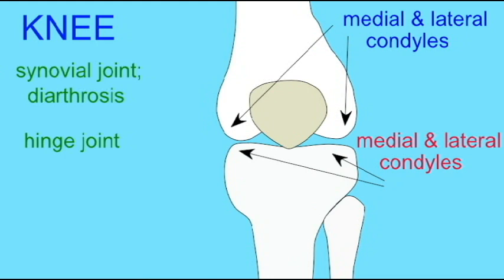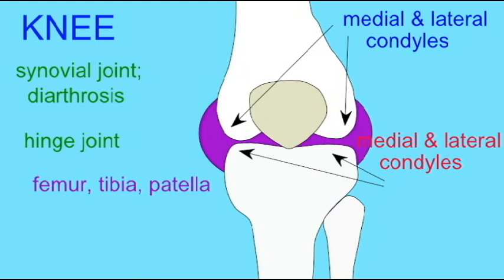Note that the fibula does not form part of the knee joint. It is close to the knee joint, but it does not form part of the knee joint, and thus the knee is composed only of the femur, tibia, and patella.